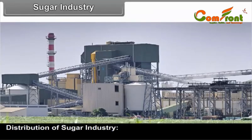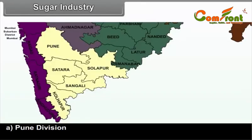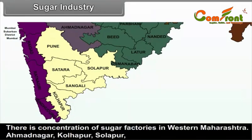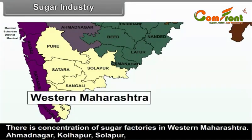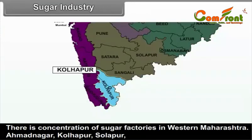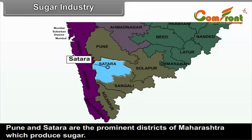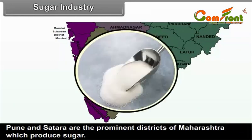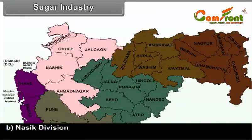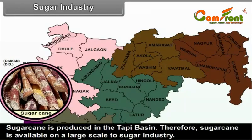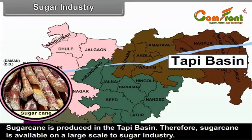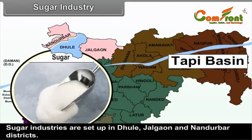Distribution of Sugar Industry. A. Pune Division: There is a concentration of sugar factories in Western Maharashtra. Ahmednagar, Kolhapur, Solapur, Pune and Satara are the prominent districts which produce sugar. B. Nasik Division: Sugarcane is produced in the Tapi Basin, so sugarcane is available on a large scale to the sugar industry. Sugar industries are set up in Dhule, Jalgaon and Nandurbar districts.